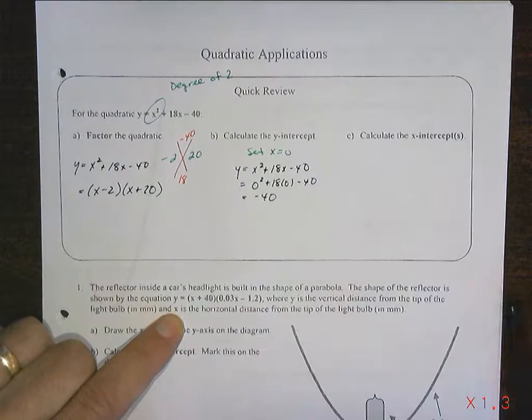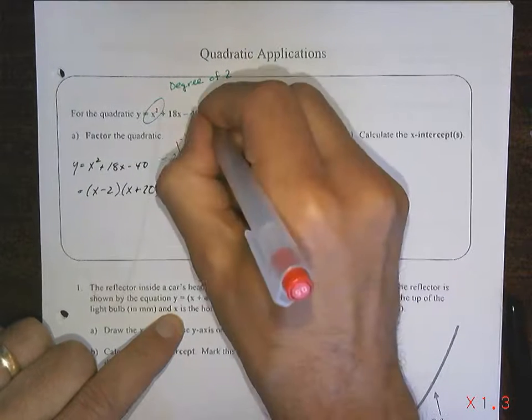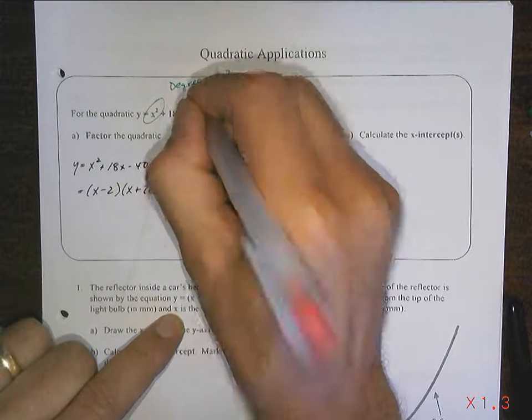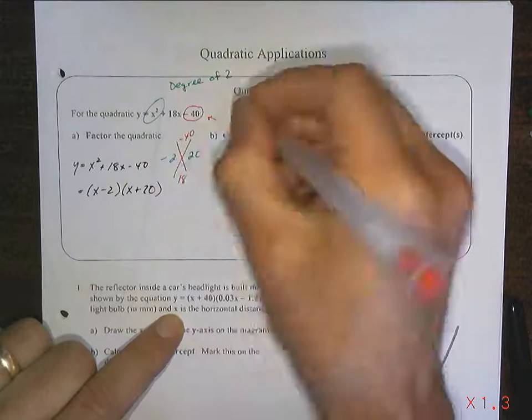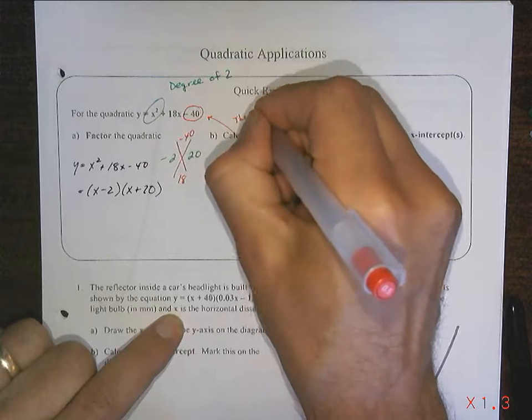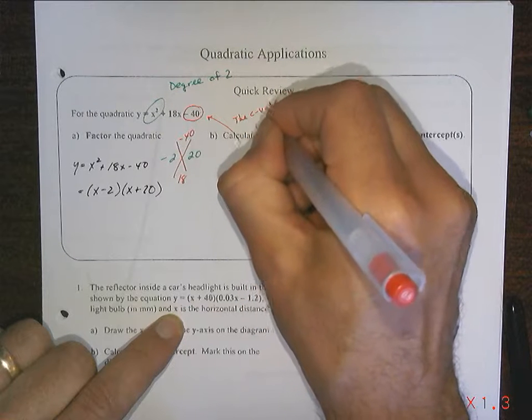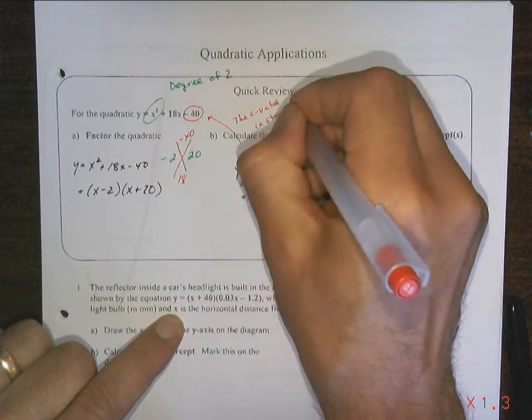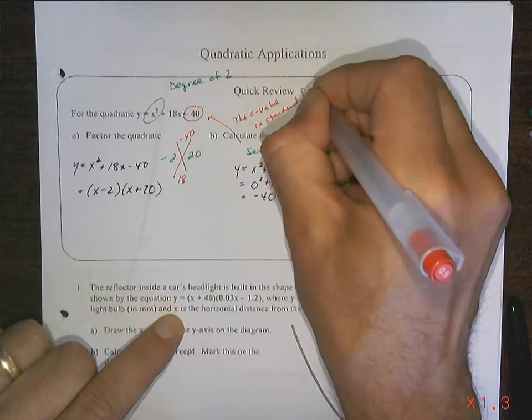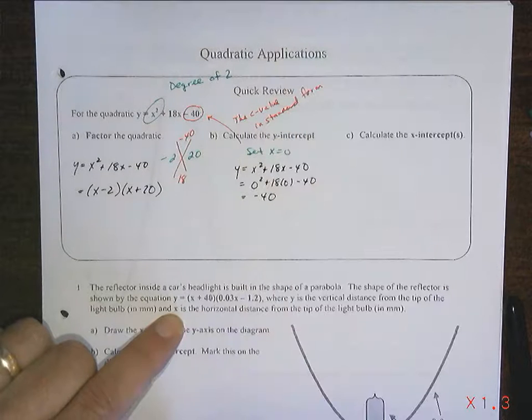I could also have just looked at the standard form and notice that it's the c value in standard form.